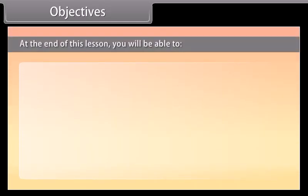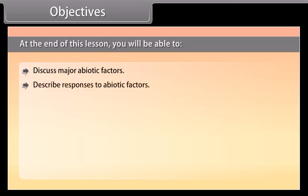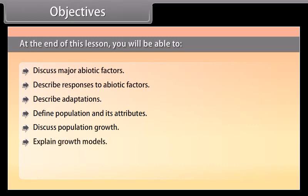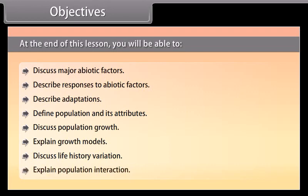At the end of this lesson, you'll be able to discuss major abiotic factors, describe responses to abiotic factors, describe adaptations, define population and its attributes, discuss population growth, explain growth models, discuss life history variation, and explain population interactions.